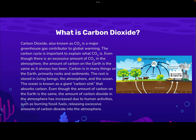What is carbon dioxide? Carbon dioxide, also known as CO2, is a major greenhouse gas contributor to global warming. The carbon cycle is important to explain what carbon dioxide is. Even though there is an excessive amount of carbon dioxide in the atmosphere, the amount of carbon on the Earth is the same as it always has been. Carbon is in many things on the Earth, primarily rocks and sediments.